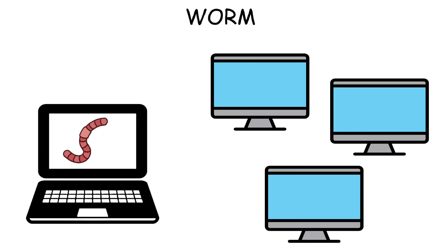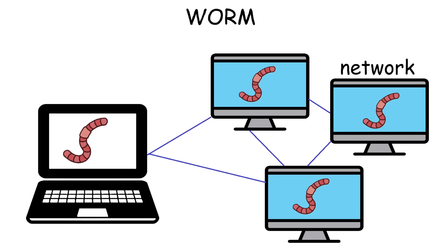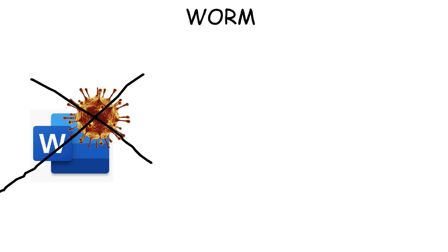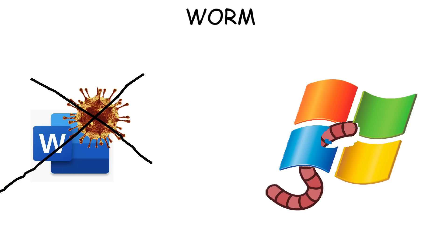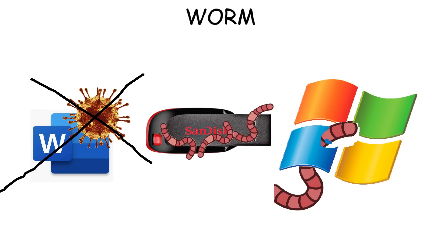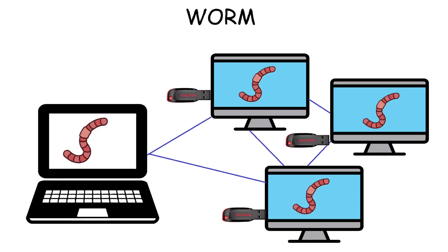A worm is a self-replicating malware that spreads automatically across networks without needing human interaction. Unlike a virus, which needs a certain file to attack, worms can simply exploit vulnerabilities in a system's software or operating system, and can also spread through an infected USB drive.